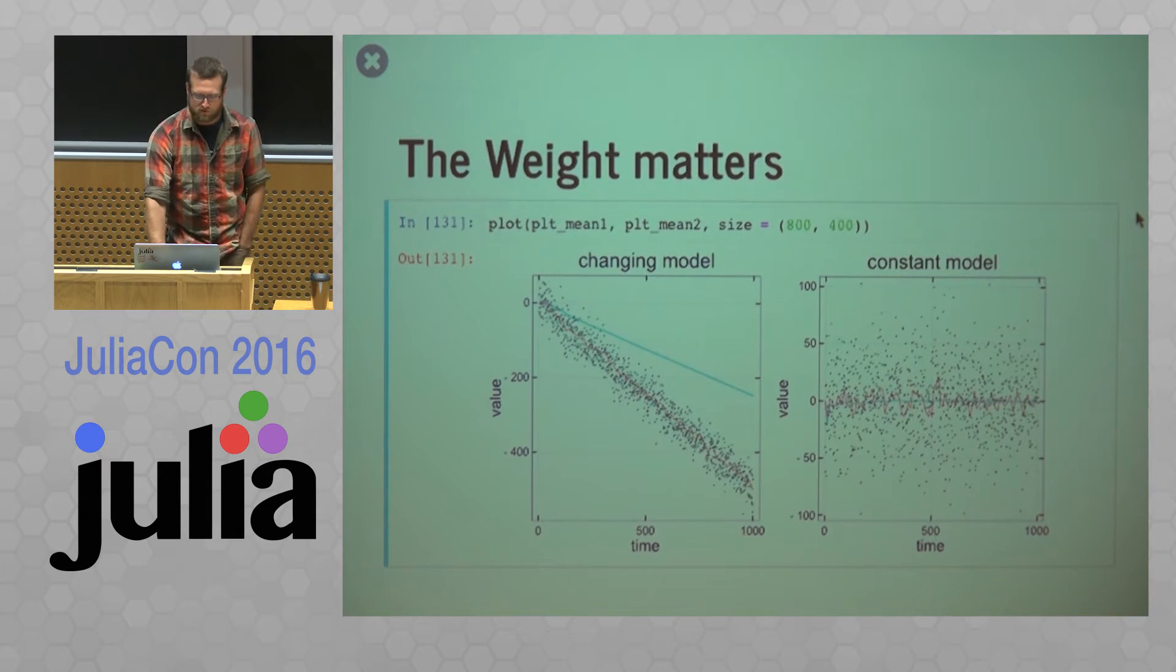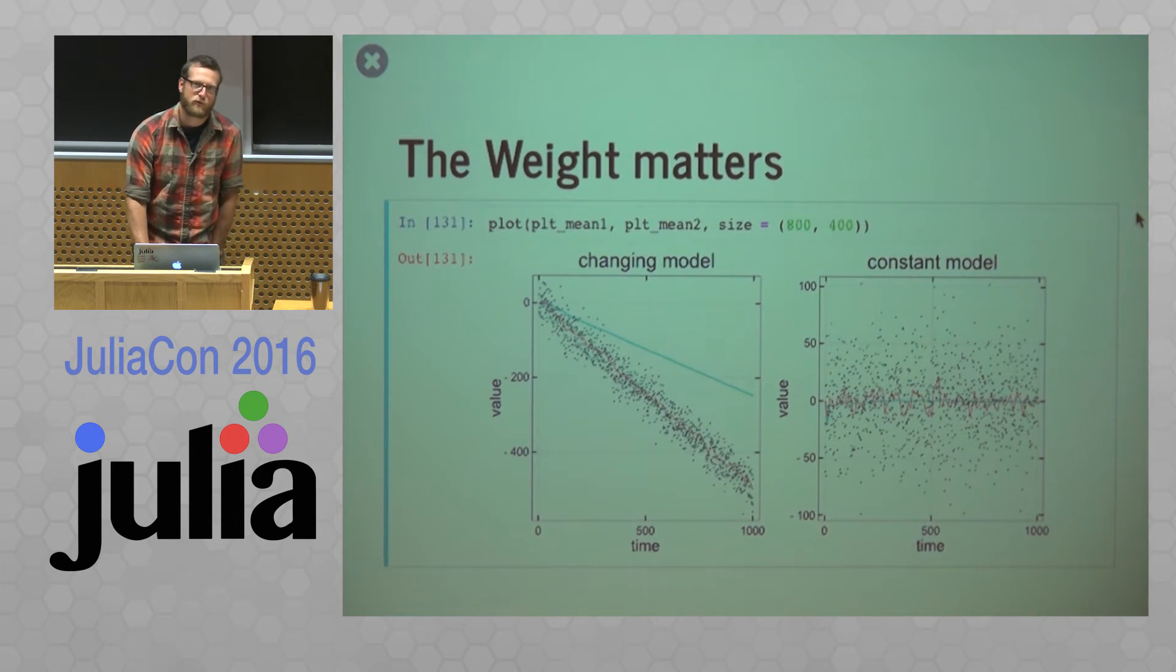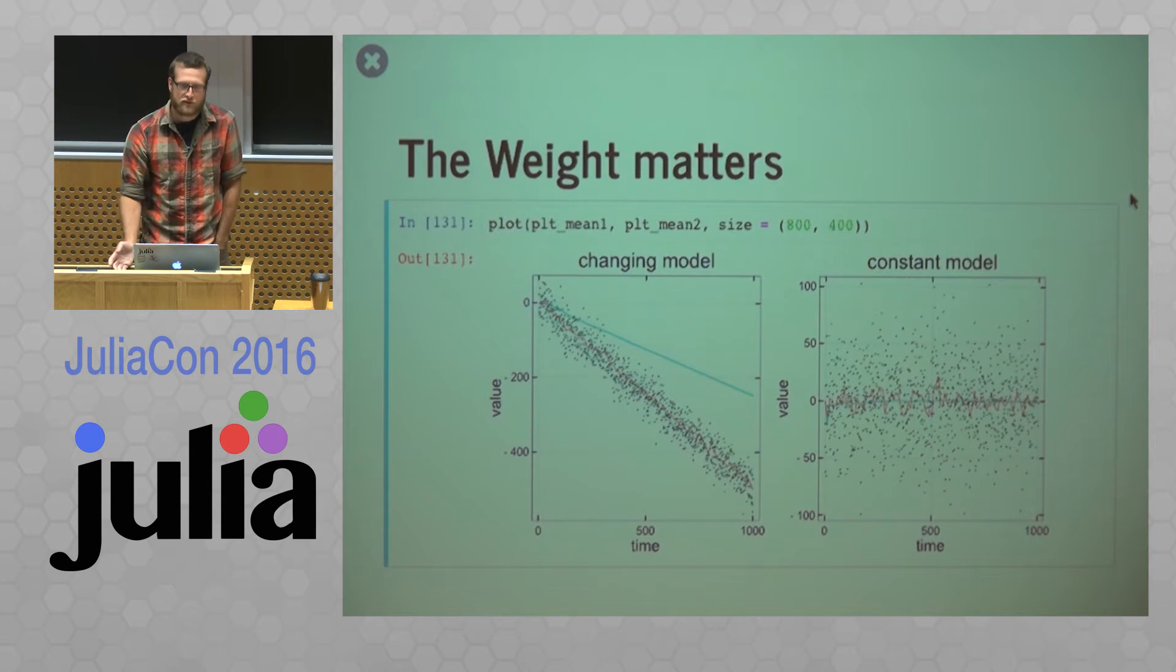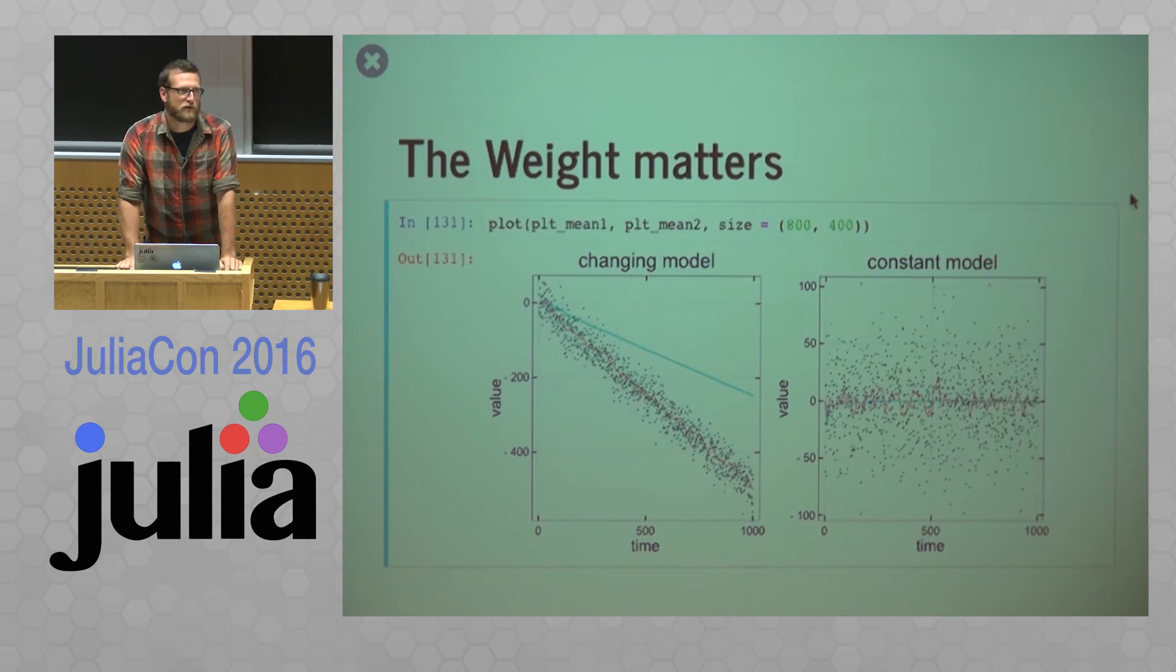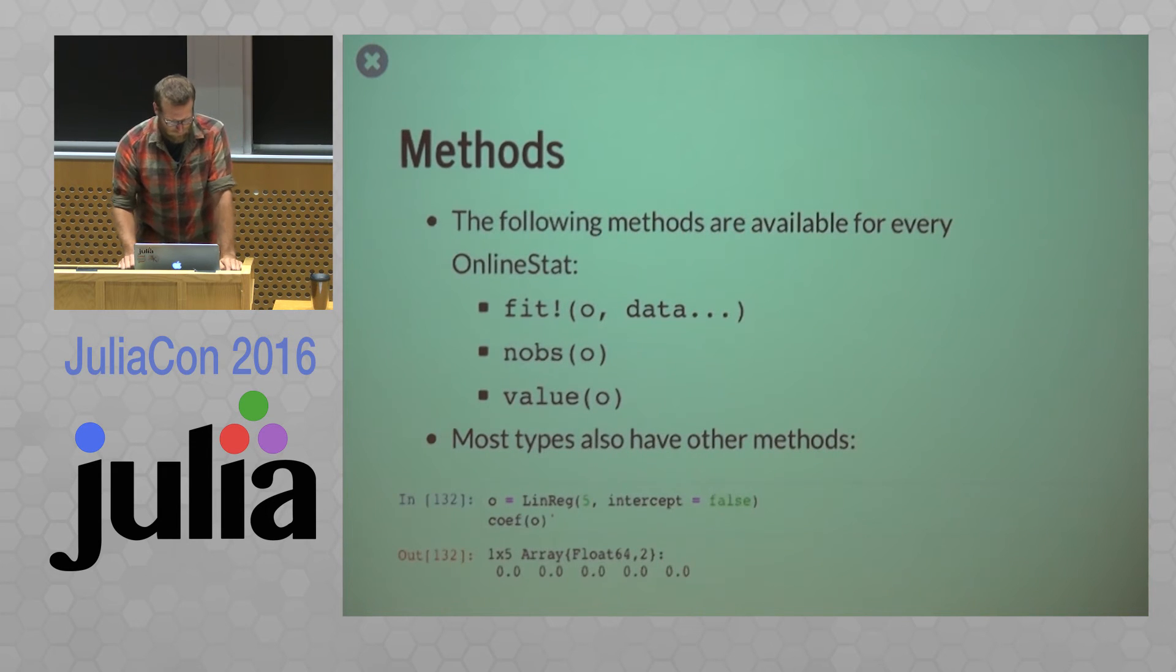So these algorithms aren't a black box. You have to understand a little bit of the relationship behind your data before you're fitting things or bad things can happen. And this is a very trivial case of just means, but worse things can happen if you're fitting, I don't know, logistic regression or some kind of more complicated model that's changing over time. So every online stat has the following methods available.